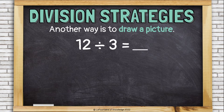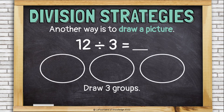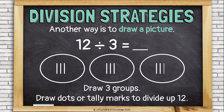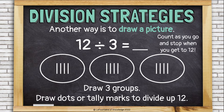Another way is to draw a picture. Let's do 12 divided by 3 using a picture this time. First, draw three groups. Then draw dots or tally marks to divide up 12. Remember, put one in each group like you're dealing cards — this is how you keep your groups even. Keep going until you've dealt out 12 tally marks. Count as you go and stop when you get to 12, then look at how many are in each group. Four.